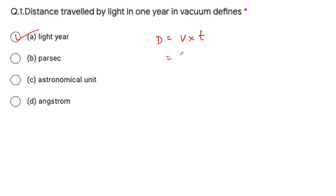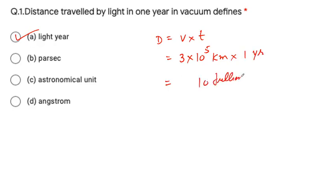Light is travelling at a speed of 3 × 10⁵ km/s, and time is around one year. When you solve it, it comes out to the order of 10 trillion km. This much distance light travels in one year, and we generally use light year because it is a very large value.